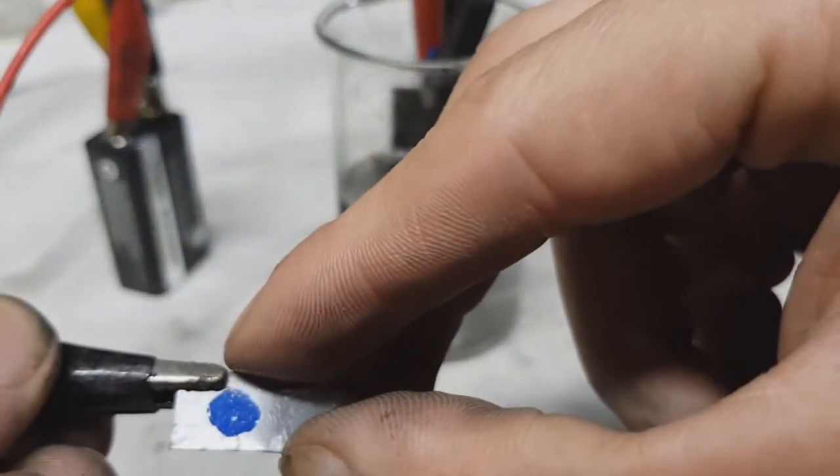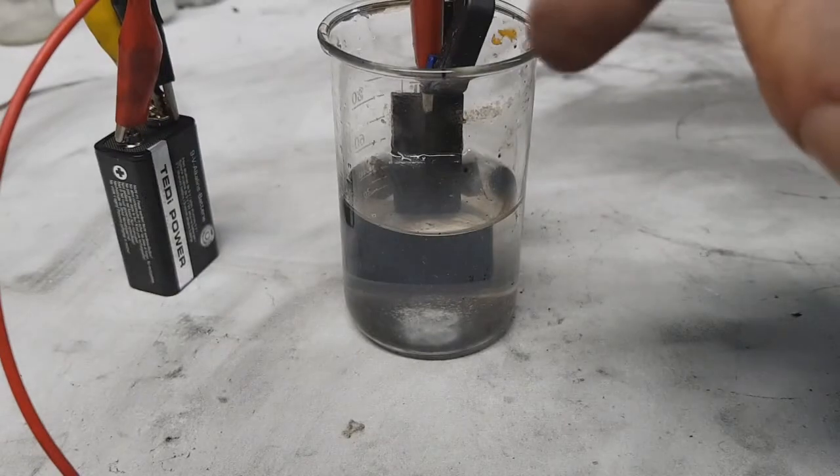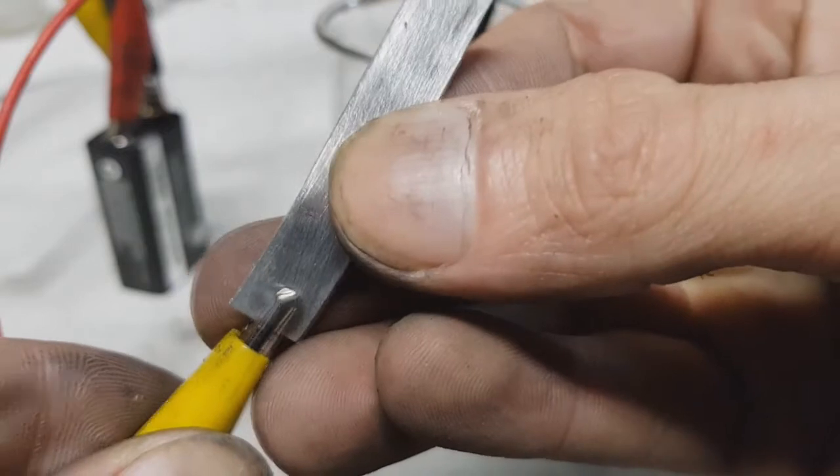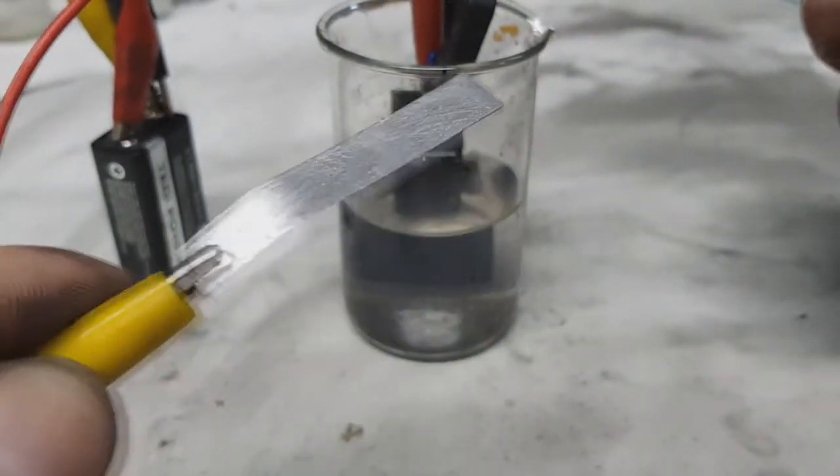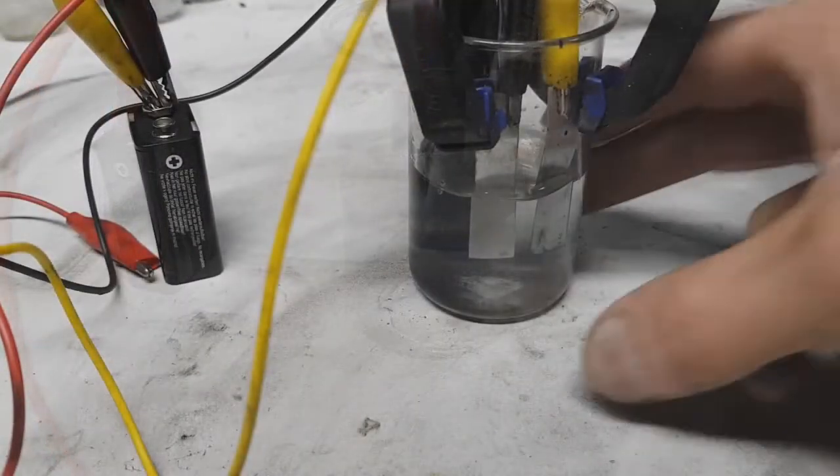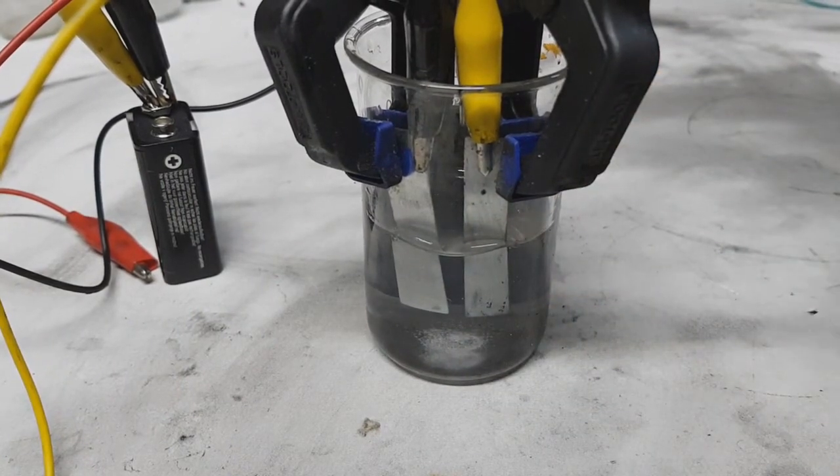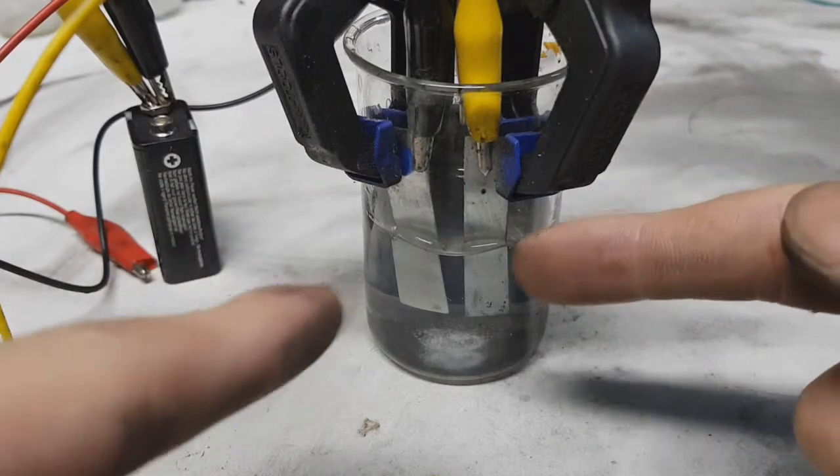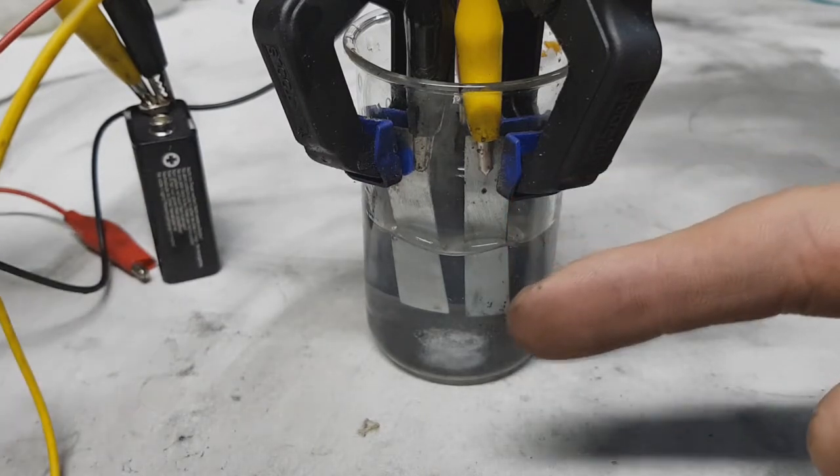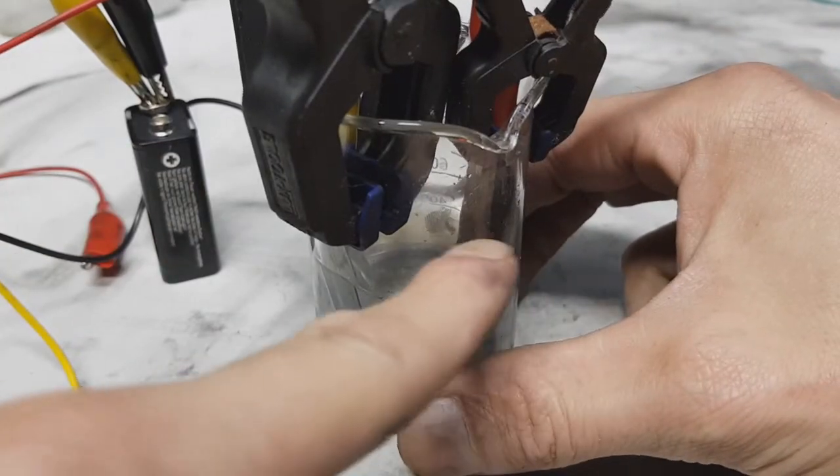And the yellow wire will go to the normal zinc electrode. So now I have my two electrodes connected to the negative terminal of the battery, and here is the positive.